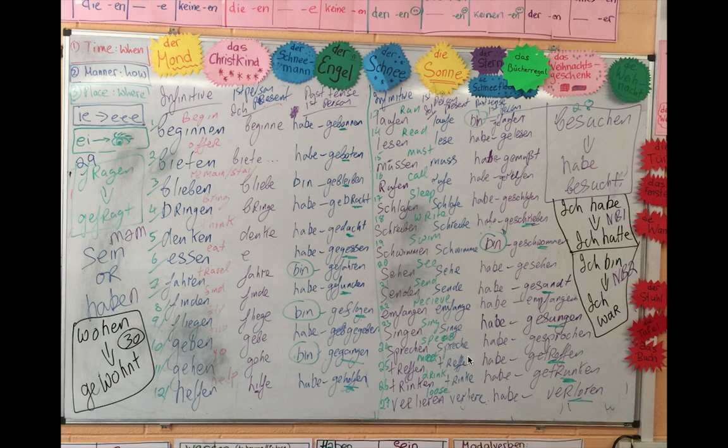Sprechen: Ich spreche, Ich habe gesprochen. Treffen: Ich treffe, Ich habe getroffen. Trinken: Ich trinke, Ich habe getrunken. Verlieren: Ich verliere, V-E-R-L-I-E-R-E, Ich habe verloren.